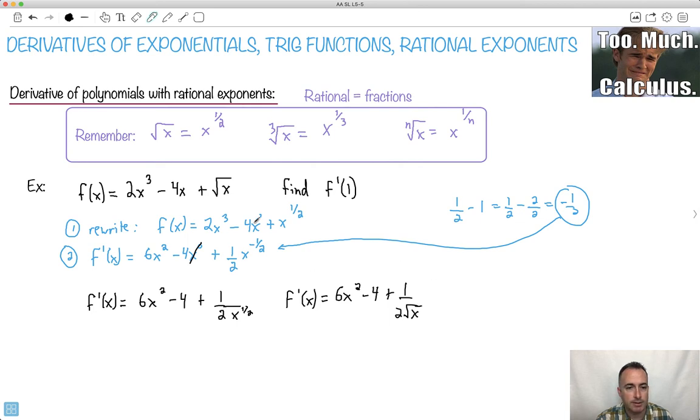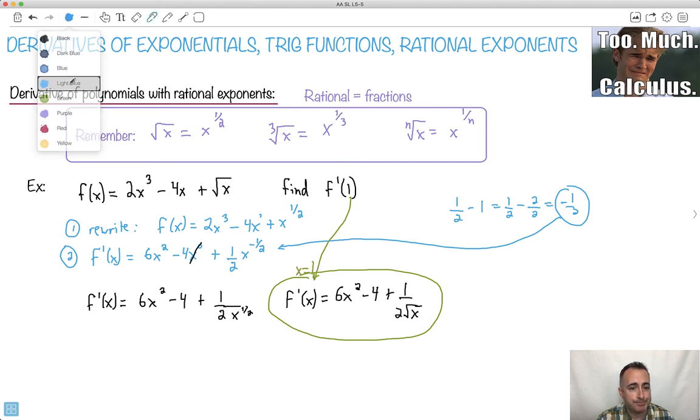But now I want it at x equals 1. So I'm going to make x equal 1 now. So that's what I'm going to do now. So I have f primed at 1. It's going to be 6 times 1 squared. Let's see, minus 4 plus 1 over 2 times square root of 1.